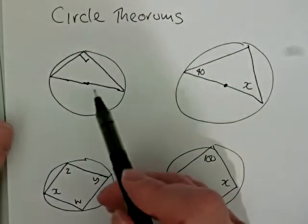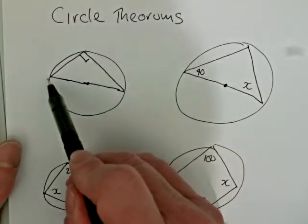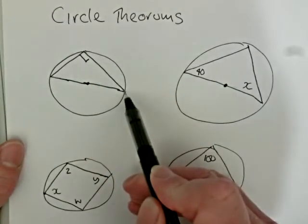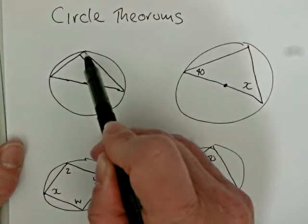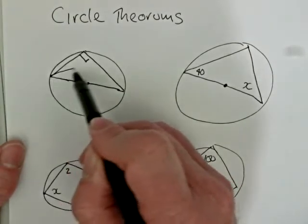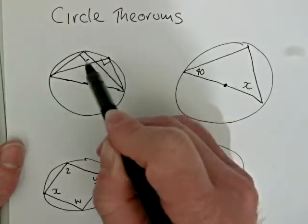So the first one is the angle in a semicircle. A semicircle is formed by the diameter and then the arc around the outside. And if we create a triangle by creating a point on the semicircle itself, then wherever that point is, the angle at the edge is going to be 90 degrees.